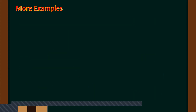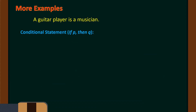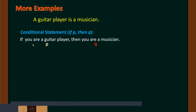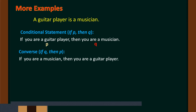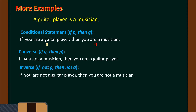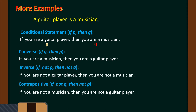More example: 'A guitar player is a musician.' Let us use the conditional statement form. Conditional: 'If you are a guitar player, then you are a musician.' Our hypothesis is 'you are a guitar player,' and our conclusion is 'you are a musician.' For the converse: 'If you are a musician, then you are a guitar player.' For the inverse: 'If you are not a guitar player, then you are not a musician.' For the contrapositive: 'If you are not a musician, then you are not a guitar player.'